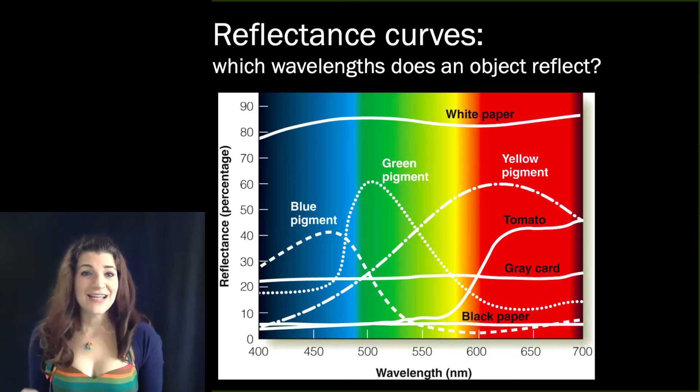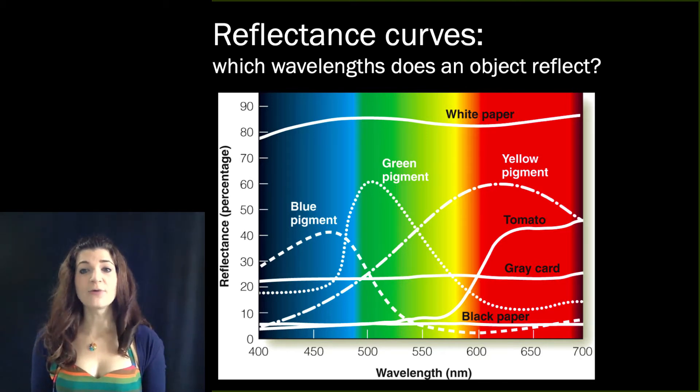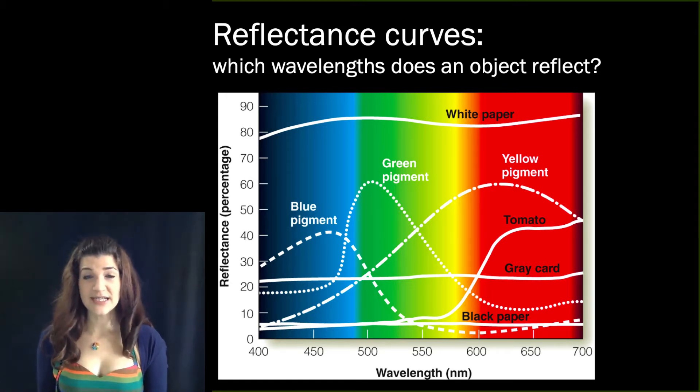We can see the same thing in a slightly different format here. These representations are called reflectance curves and they quantify the amount of light reflected and absorbed by different objects. So the percentage of light reflected is represented up the y-axis and the wavelength of light is shown along the x-axis.